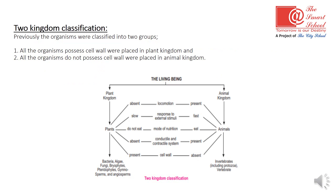The first system was the two-kingdom classification, in which organisms were classified into two groups. All organisms possessing cell walls were placed in the plant kingdom, and all organisms without cell walls were placed in the animal kingdom. The classification was studied using cytological characteristics, creating the plant kingdom and animal kingdom as two groups.